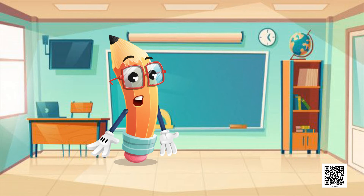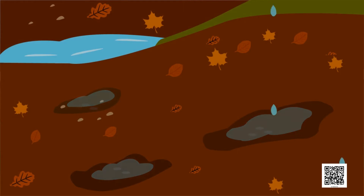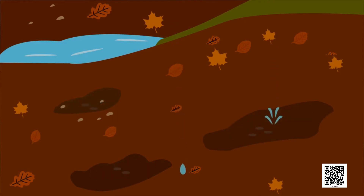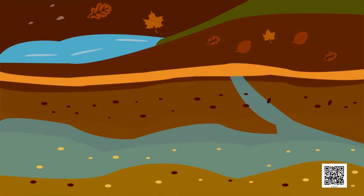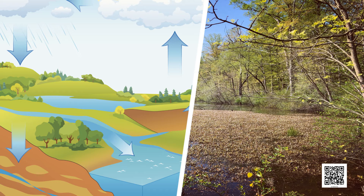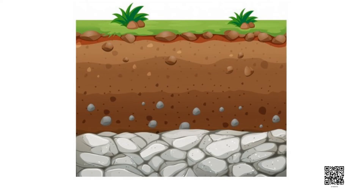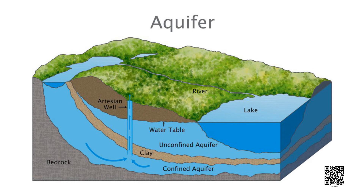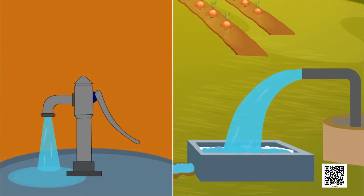Now let us see what is groundwater. The rainwater and the water from other sources such as rivers and ponds seeps through the soil and fills the empty spaces and cracks deep below the ground. The process of seeping of water into the ground is called infiltration. The groundwater thus gets recharged by this process. At places, the groundwater is stored between the layers of hard rocks below the water table — this is known as an aquifer. Water in the aquifer can usually be pumped out with the help of tube wells or hand pumps.